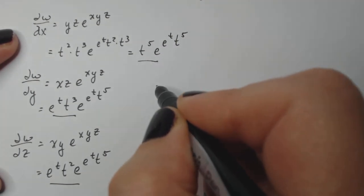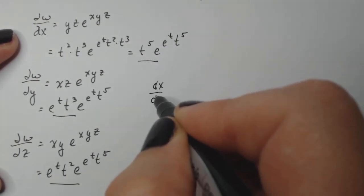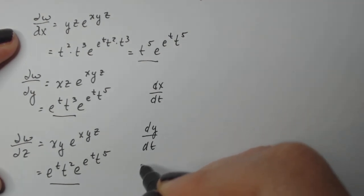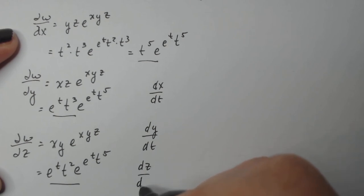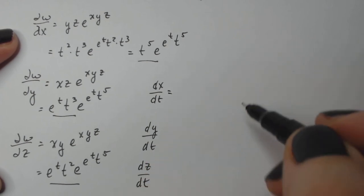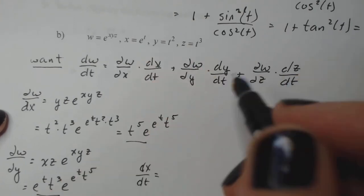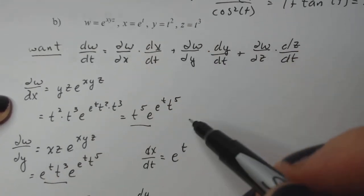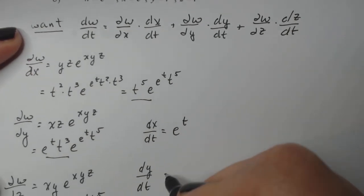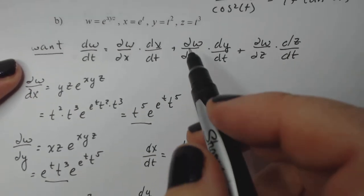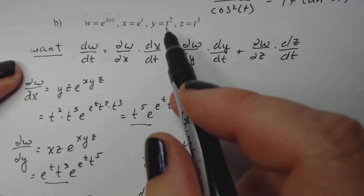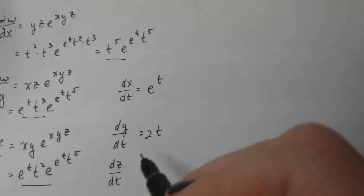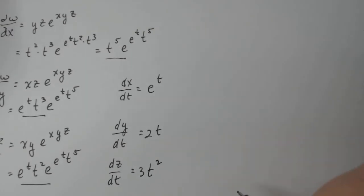Now I need the other three pieces. X is eᵗ, so dx/dt is eᵗ. Y is t squared, so dy/dt is 2t. Z is t cubed, so dz/dt is 3t squared.